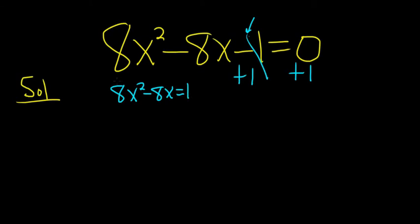Now we have to make sure that the coefficient of x², that's the number in front of x², is 1. So we divide everything by 8. These cancel, so we get x² - x = 1/8.